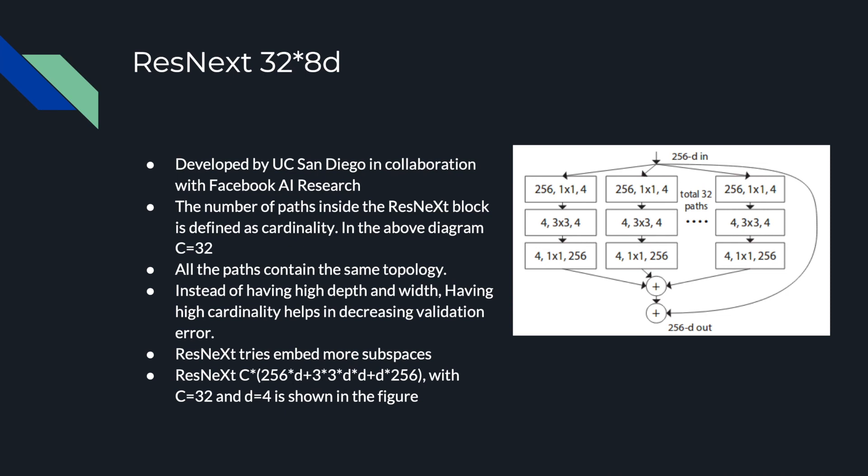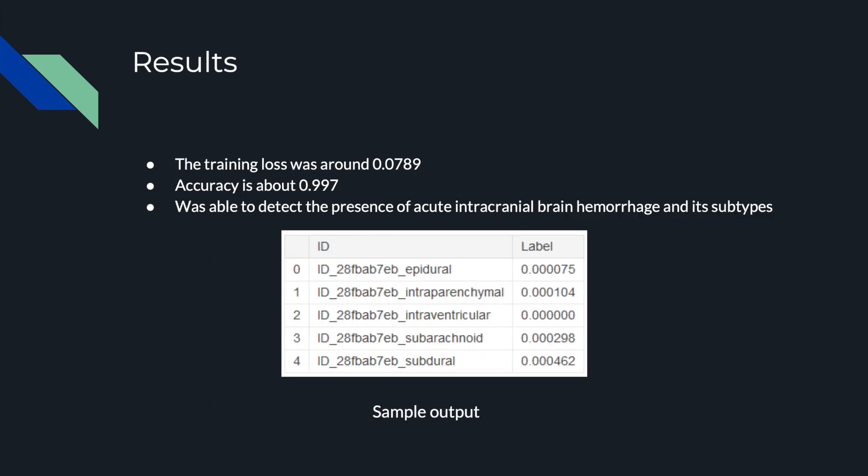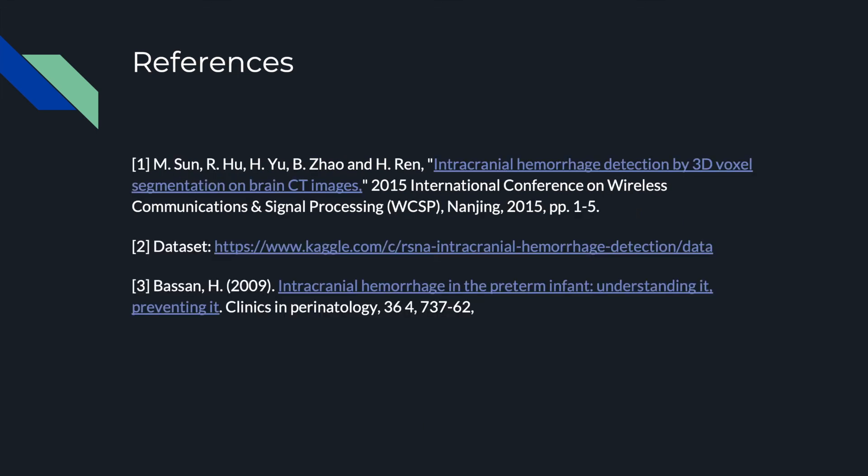The diagram shows ResNeXt with a cardinality of 32 and depth of 4. The training loss was reduced to approximately 0.0789, and accuracy is about 0.997. The model is used to detect the presence of intracranial hemorrhage and its subtypes. The sample output is in the format ID_imagename_type, with the probability of each hemorrhage type in the adjacent column. These are the references used for this project. Thank you.